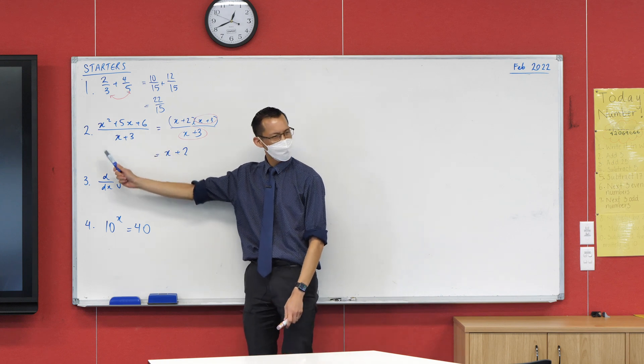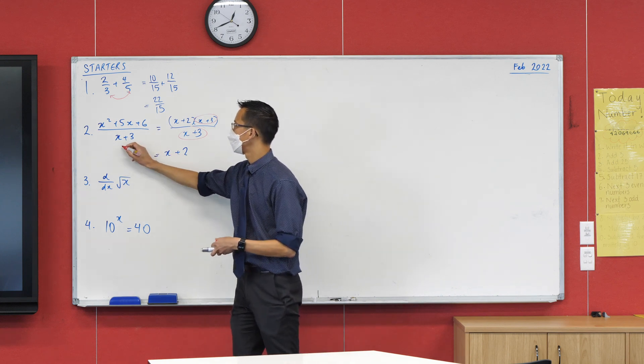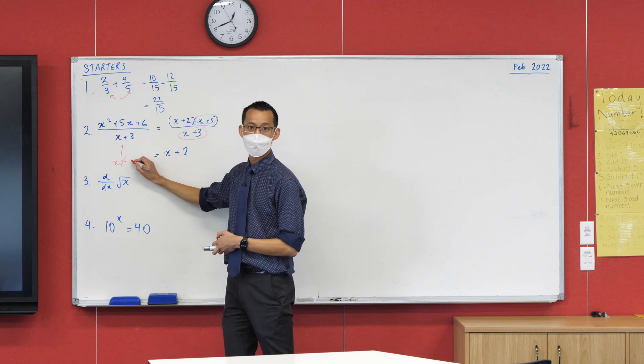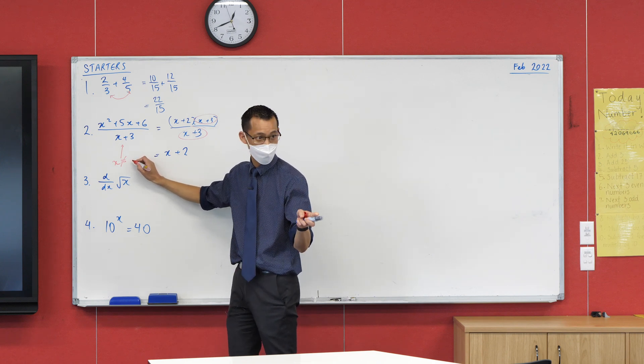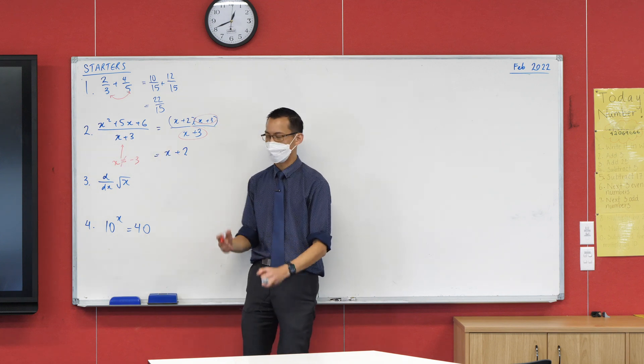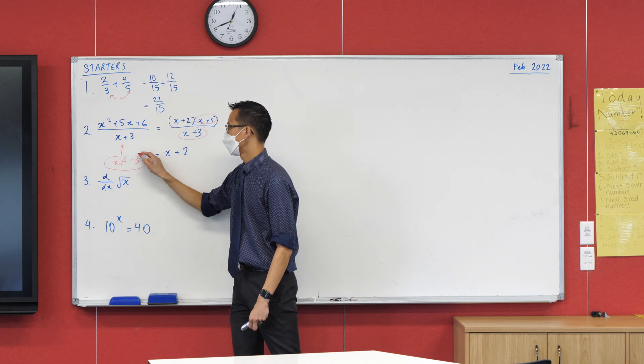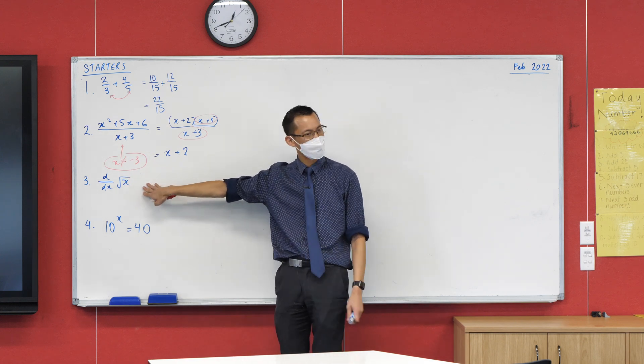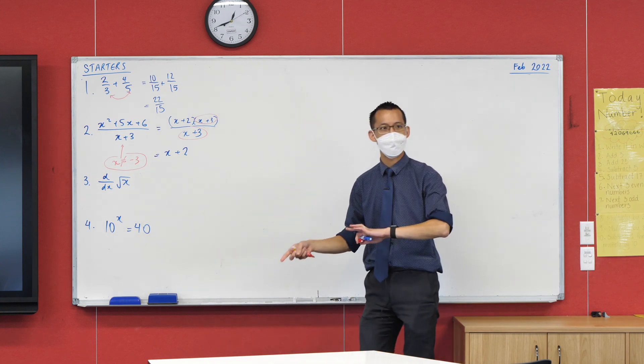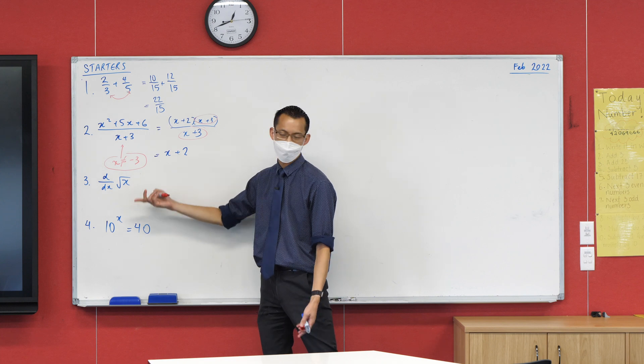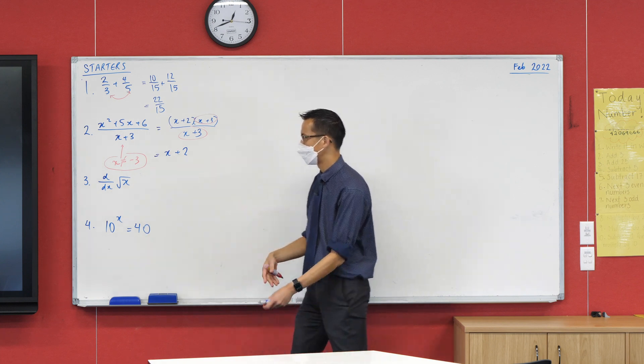And this is what we call a domain restriction that x, in this case, it can't equal negative 3. Yeah, exactly. Because if you put negative 3 in, that would make the whole thing 0, right? And these kinds of domain restrictions, they happen all the time. Even this question here, I didn't talk about it, but that's got a domain restriction too, right? X can't be a negative number because then you can't take the square root of a negative, right? At least under our rules.